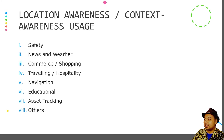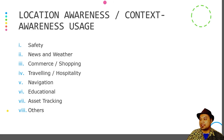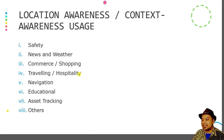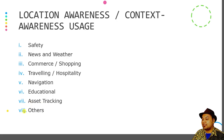Here are the usage areas for context awareness and location awareness. Both can be used in safety applications, news and weather applications, commerce and shopping, traveling and hospitality, navigation, education, asset tracking, and many other applications that may benefit from the use of location awareness and context awareness.